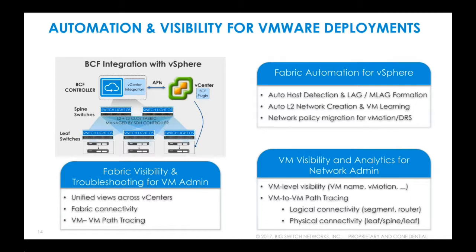Once automation is in place, the next critical need is visibility. BCF provides VM-level visibility for the network team through either GUI or CLI, enabling VM-to-VM path tracing and viewing both logical and physical connectivity of endpoints. For VM admin teams, the same information is available in the vCenter console, giving them a unified view of the network. We'll look at what VM-to-VM path tracing looks like in each console.